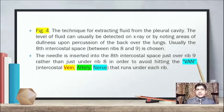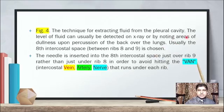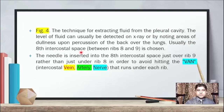We have covered that point. Now the technique for extracting fluid from the pleural cavity — how is it taken, from which rib? The level of fluid can usually be detected on X-ray, or by noting areas of dullness upon percussion of the back over the lung. Usually the 8th intercostal space — between the 8th and 9th ribs — is chosen and selected, and from there a sample is carefully taken by a specialist doctor.